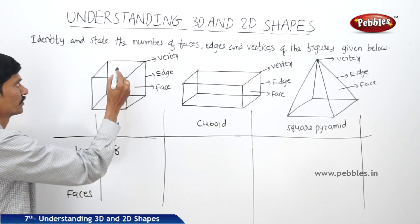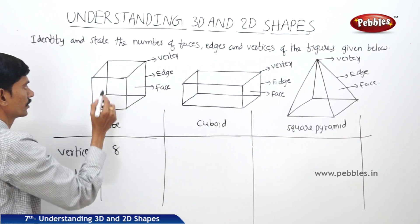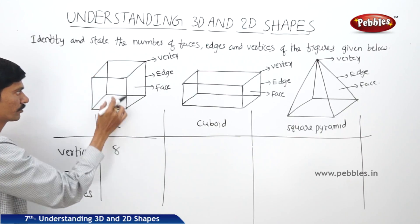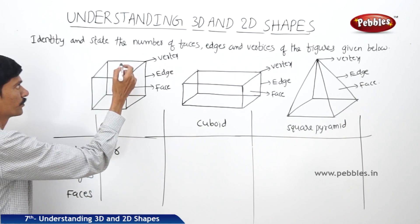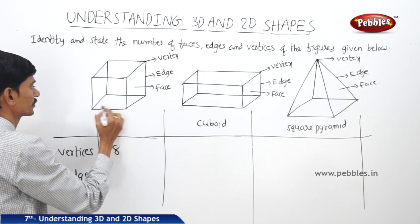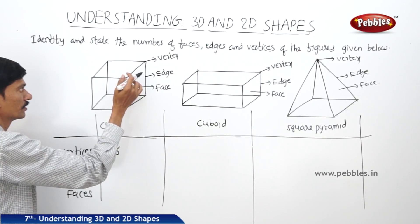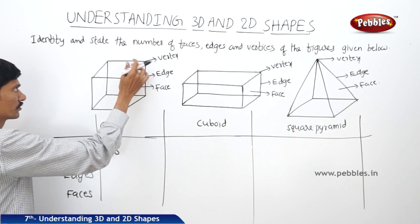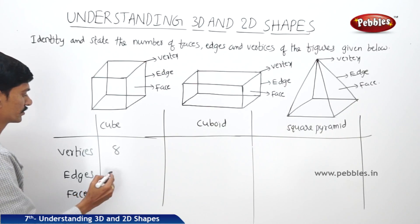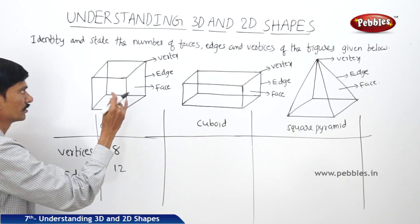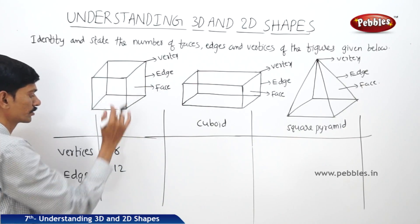Now the edges — in the top: one, two, three, four, and in the bottom also four, so four plus four is eight. Then the four lateral side edges — four plus four is eight, plus four is twelve edges. And the faces: four lateral faces plus the top and bottom, so total six faces.